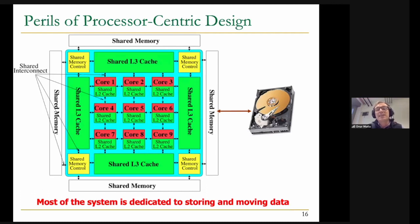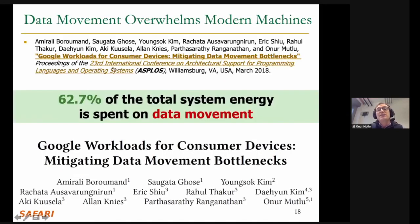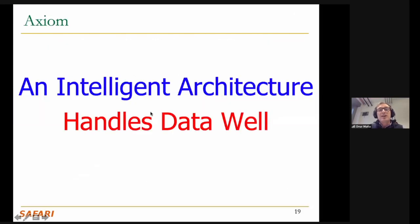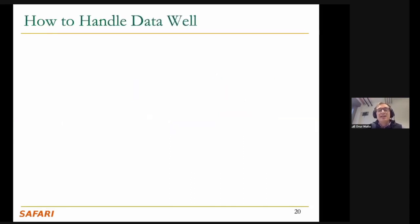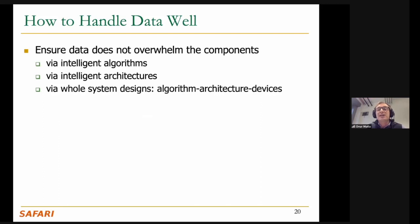Maybe we should really be thinking about a paradigm change to enable real computing devices that dedicate most of their resources to actual computation as opposed to data storage and movement. We found in a study with Google that more than 60% of the total system energy is spent on data. So I'll start with this axiom: an intelligent architecture has to handle data well. I believe there are three steps for this. First, we need to ensure that data does not overwhelm the components of the architecture by designing intelligent algorithms, intelligent architectures, and perhaps even more importantly, whole system designs — algorithms, architectures, and devices — that are all intelligent in how they handle data. This leads into the data-centric computing paradigms we're going to discuss throughout this talk.